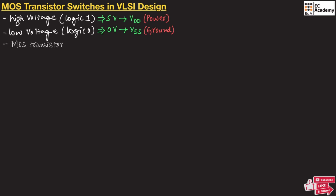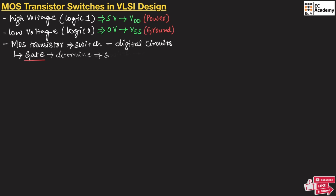The metal oxide semiconductor transistor acts as a switch in digital circuits in VLSI design. In the MOS transistor, the gate terminal will determine whether the switch is on or off. So, the MOS transistor acts as a controlled switch in digital circuits.